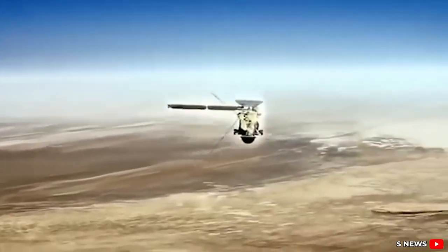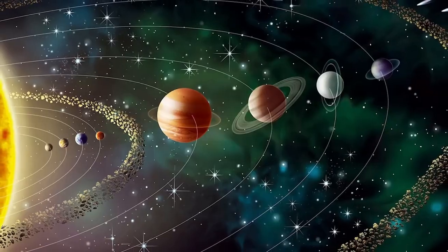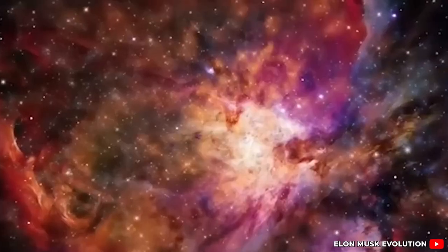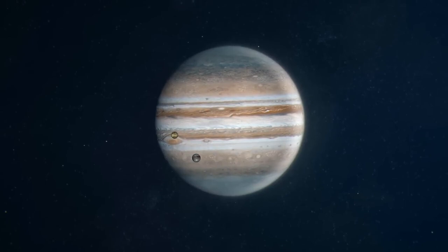In October 2024, Voyager 1 experienced a communication anomaly when it unexpectedly ceased sending data via its primary X-band transmitter, which operates at higher power and provides more detailed telemetry.